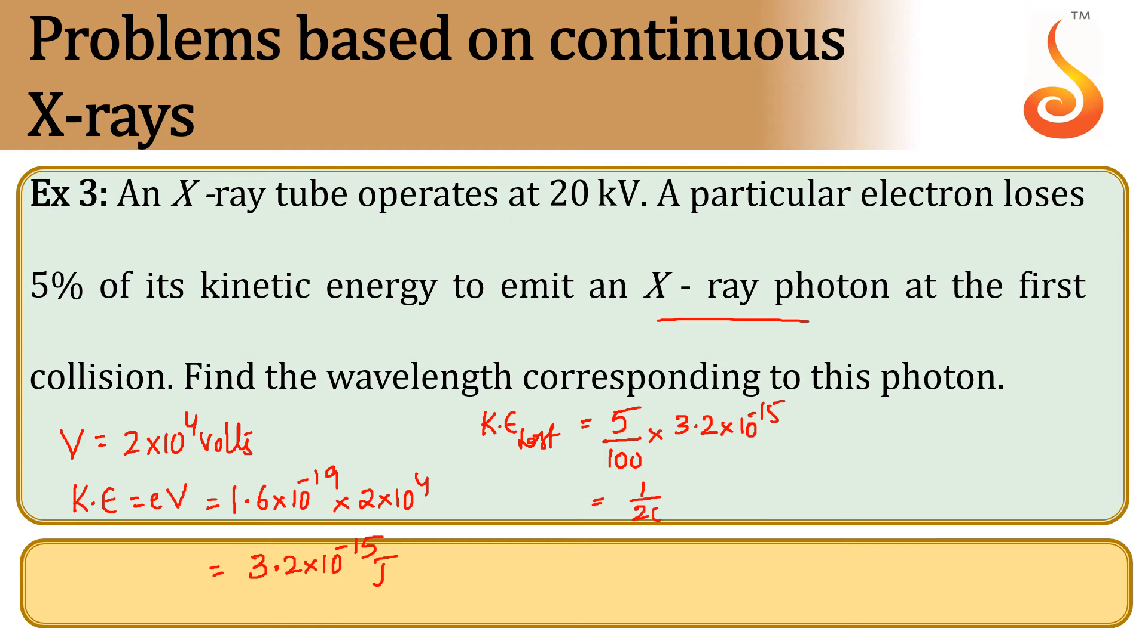1 by 20 × 3.2 × 10^-15 joules, which gives us 1.6 × 10^-16 joules of the kinetic energy lost by one electron.